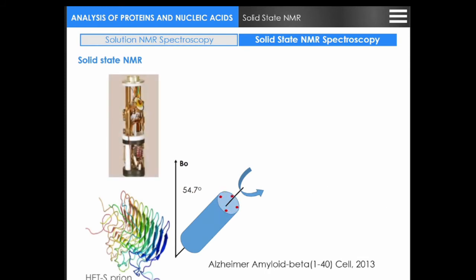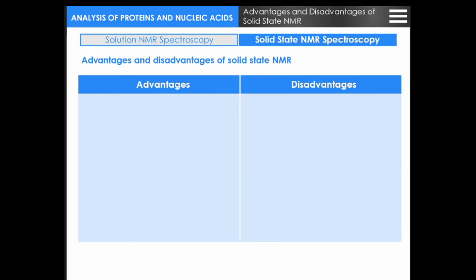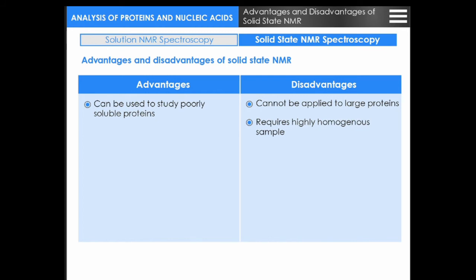High-resolution conditions for protein resonances in solids such as amyloids, filaments, or precipitates can be established using fast magic angle spinning of protein samples in suitably designed rotors. Under these conditions, isotropic interactions can report on local structure by detecting isotropic chemical shifts. In addition, decoupled interactions can be selectively reintroduced and used, for example, for transfer of polarization to derive structural parameters. Solid-state NMR can be used to study poorly soluble proteins; however, it cannot be applied to large proteins, requires a highly homogenous sample, has trouble with flexible protein regions, and has limited resolution and sensitivity.